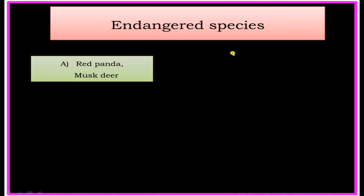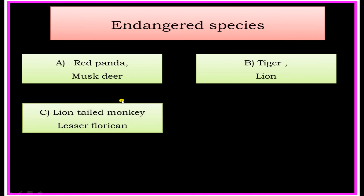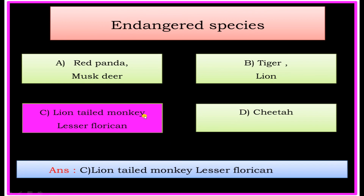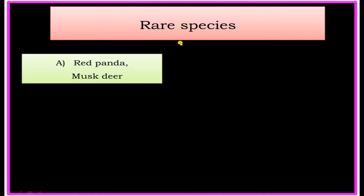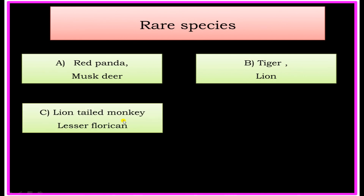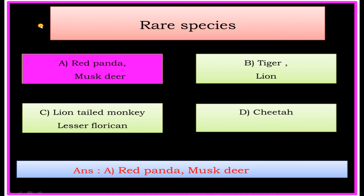Endangered Species. Options: A) Red Panda and Musk Deer, B) Tiger and Lion, C) Lion-Tailed Monkey and Lesser Florican, D) Cheetah. The answer is: Lion-Tailed Monkey and Lesser Florican. Vulnerable Species answer: Red Panda and Musk Deer.